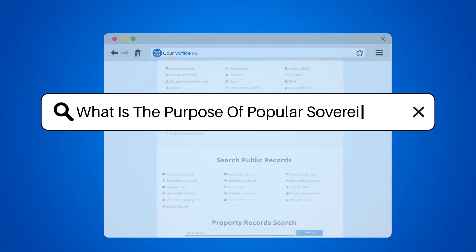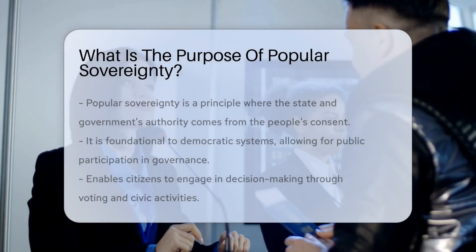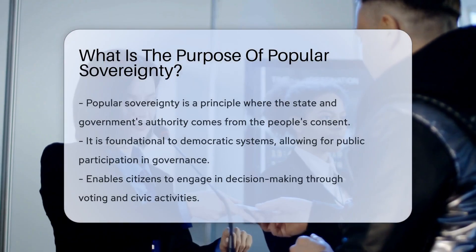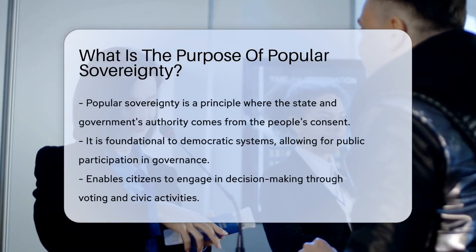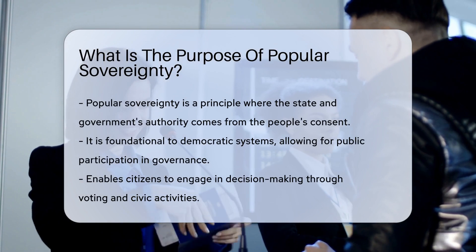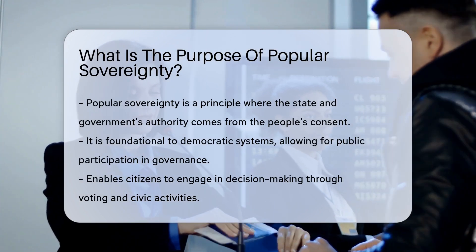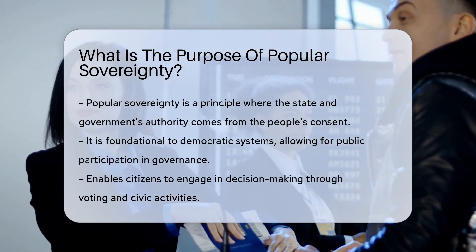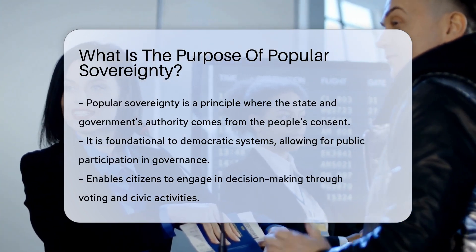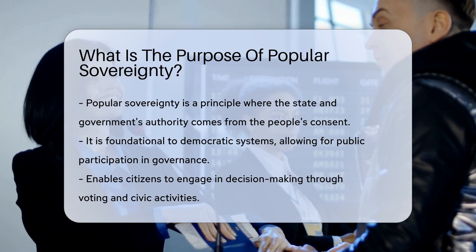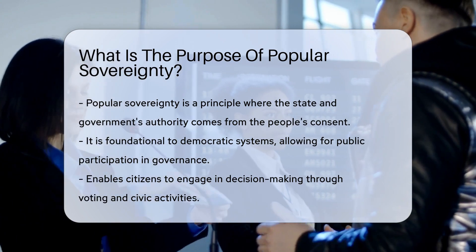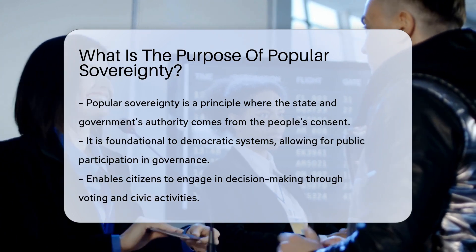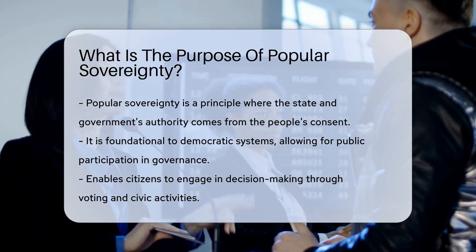What is the purpose of popular sovereignty? Popular sovereignty is a principle in which the authority of a state and its government is created and sustained by the consent of its people. It emphasizes the idea that the power of the government is derived from the people it governs.